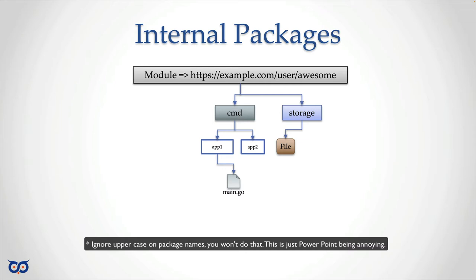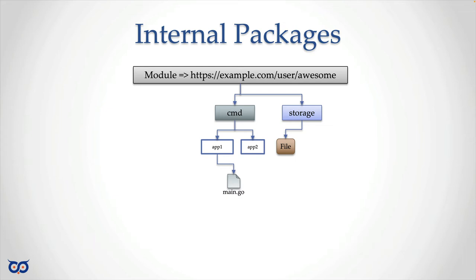We're not going to put any Go source files directly in the storage directory. Instead we create another directory called file and within it we'll put some Go source files. This type of storage is going to represent file storage — as opposed to memory storage, database storage, or NoSQL storage like Mongo or Redis. So file here doesn't mean a literal source file, but a type of storage. We know that any one of our commands can import things from this file package.